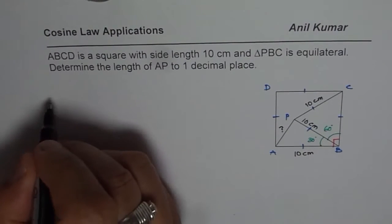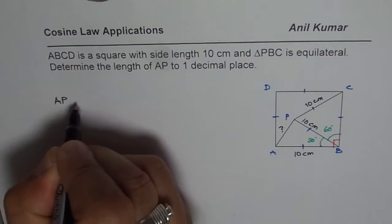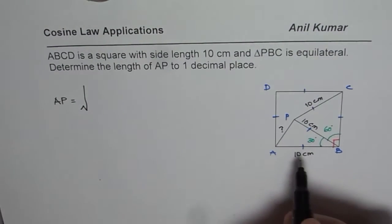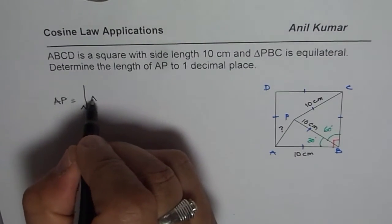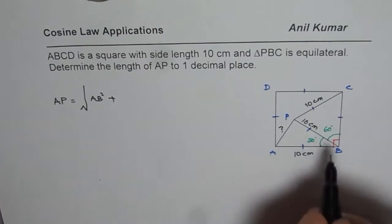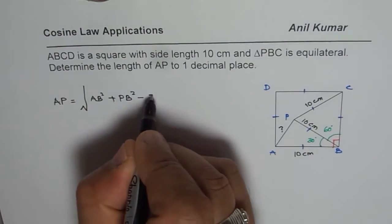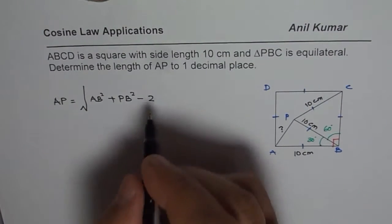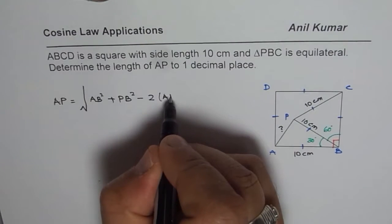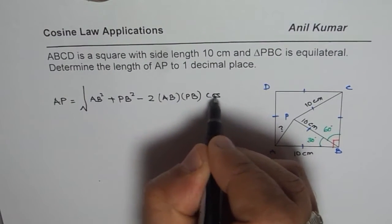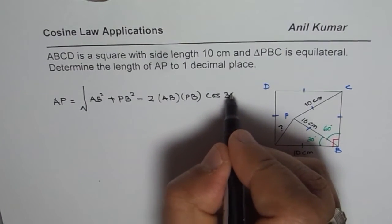So from here you can apply the cosine law and say AP equals square root of AB square plus PB square minus 2 times AB times PB times cos of the angle, which in this case is 30 degrees.